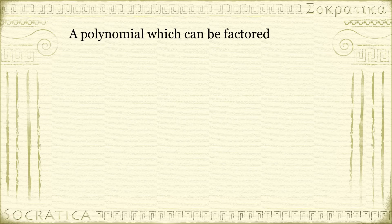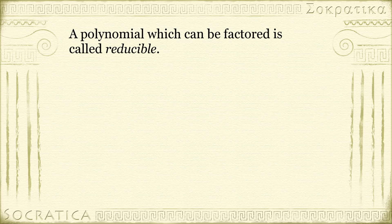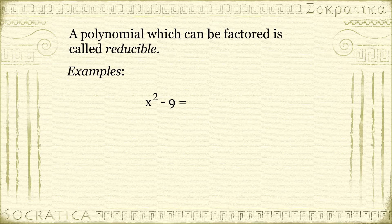A polynomial which can be factored is called reducible. For example, we've seen in another video that you can factor the difference of two squares. We can factor x² - 9 as (x - 3)(x + 3).